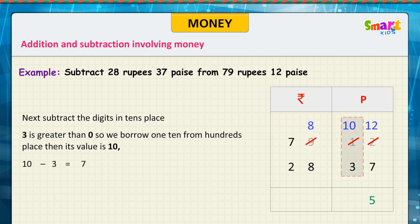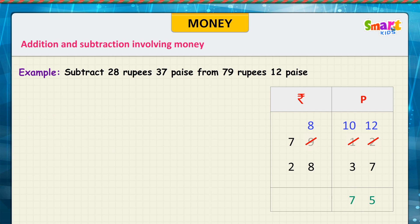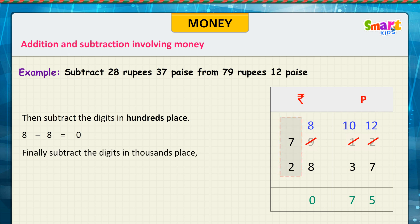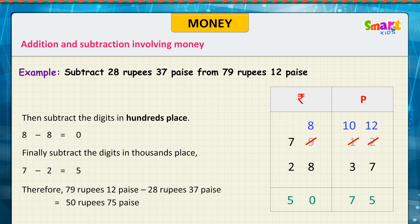After borrowing, we get 10 minus 3 is equal to 7. Then subtract the digits in the hundreds place: 8 minus 8 is equal to 0. Finally, subtract the digits in the thousands place: 7 minus 2 is equal to 5. Therefore, 79 rupees 12 paise minus 28 rupees 37 paise is equal to 50 rupees 75 paise.